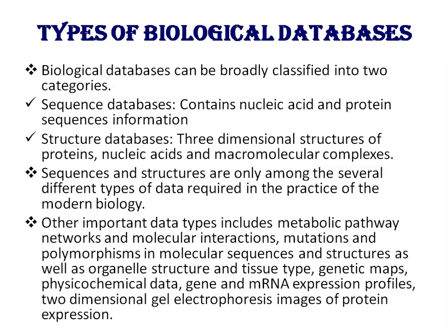Sequences and structures are only among several different types of data required in modern biology. Other important data types include metabolic pathways, network and molecular interactions, mutations and polymorphisms in molecular sequences and structures, organelle structure and tissue types, genetic maps, physicochemical data, gene and mRNA protein expression profiles, and two-dimensional gel electrophoresis images of protein expression.